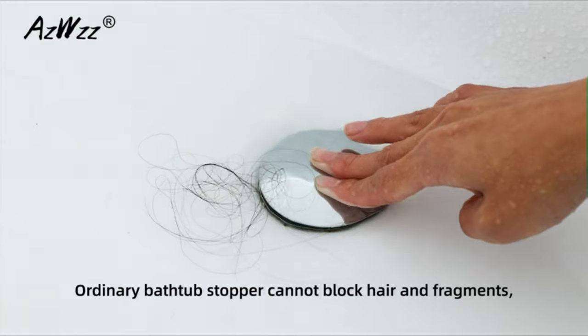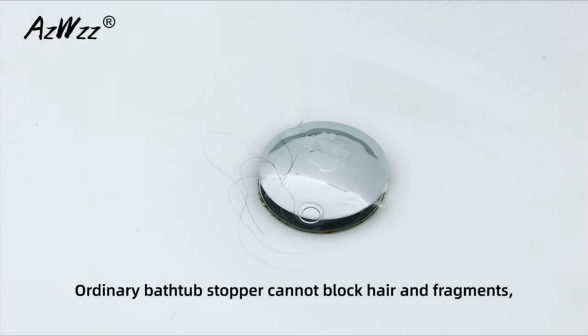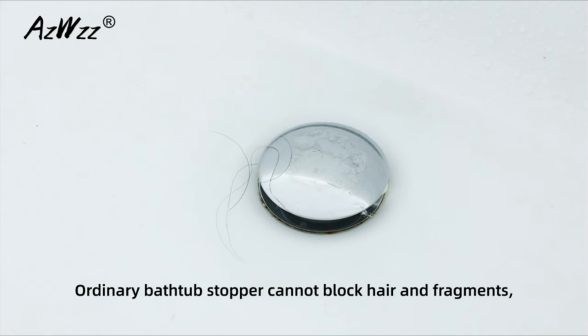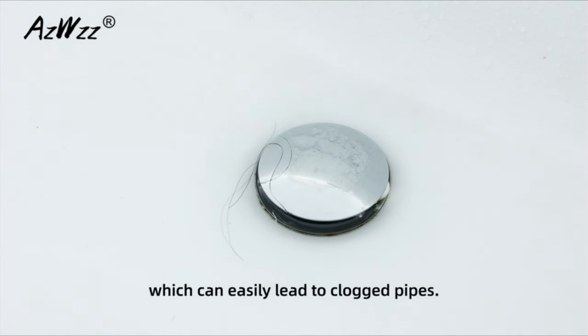Oz WZZ bathtub stoppers drain plug fits above 99% US standard bath stopper drains hole. Recommended for drainer holes size between 1 3/8 to 2 inches in diameter or 37 millimeters to 50 millimeters, the depth of the drain hole must be no less than 1 1/8 inch or 28 millimeters.